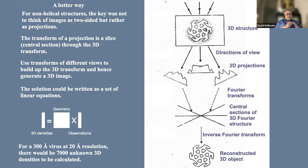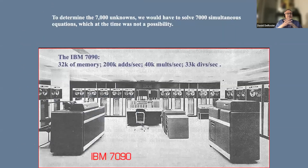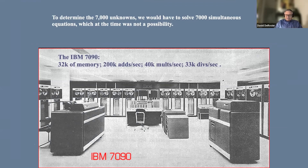For a 300-angstrom virus at 20-angstrom resolution we had about 7,000 unknowns. The IBM 7090 had 32K of memory and was extremely slow by today's standards, so inverting a set of 7,000 simultaneous equations simply wasn't a possibility. While we had an idea of how to do it, actually carrying out such a calculation was another matter.